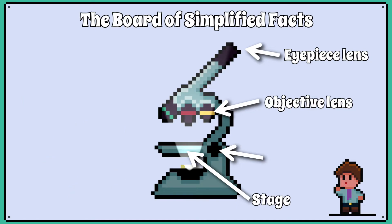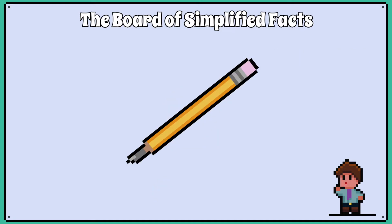The wheel on the side is the focus wheel. We use this to adjust the focus — basically how the light hits our eyes — so that we can see the cells more clearly. In the specified practical you are asked to draw and label the cheek and onion cells as they appear under ×40 magnification.